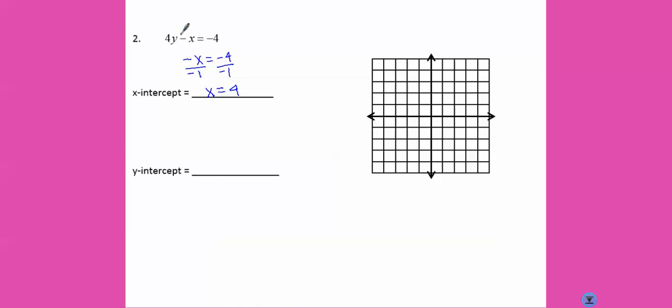Next, we're going to ignore the x part. And we get 4y equals negative 4. Divide both sides by 4. We get y equals negative 1.